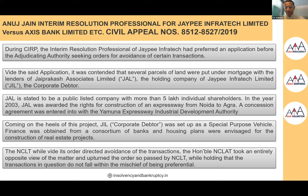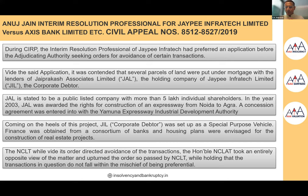JIL owned land worth approximately 3,000 crores, which was given to the creditors of JAL as security. This was considered a preferential transaction. At the NCLT stage, it was held that since the property was given to creditors of JAL — and JAL's creditors were not creditors of JIL, nor was JAL itself a creditor of JIL per the arguments — Section 43 was not attracted, and this transaction did not qualify as a preferential transaction.